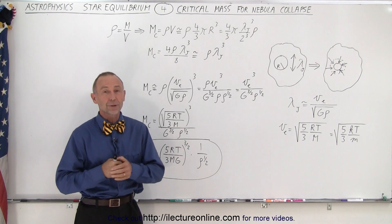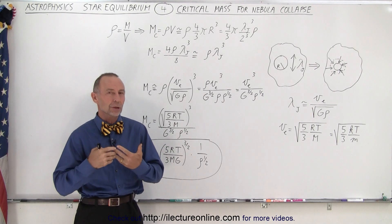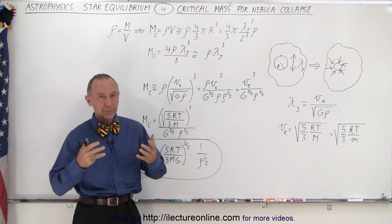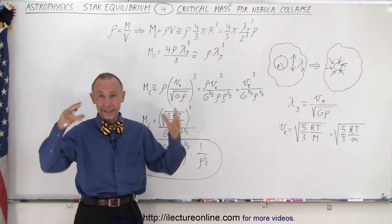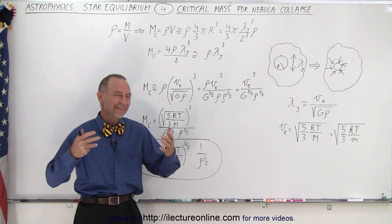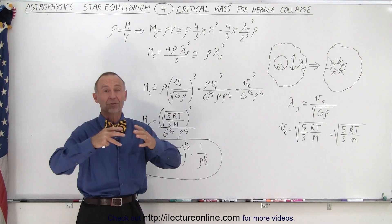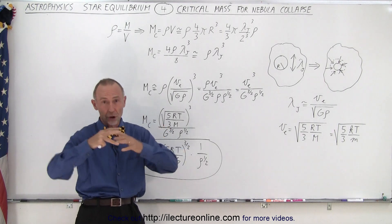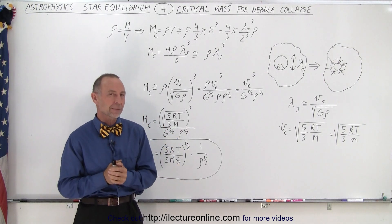Welcome to our Lecture Online. In the previous video, we took a look at Jeans length, the minimum diameter required for a molecular cloud or interstellar matter to achieve enough density for it to collapse under gravitational force against all other forces trying to prevent that from happening.